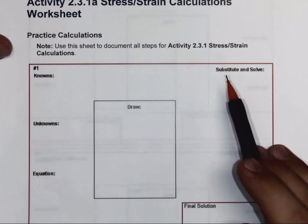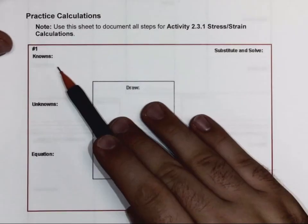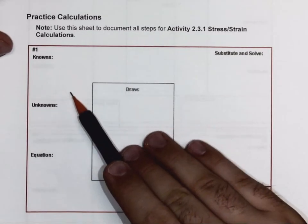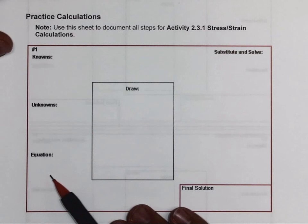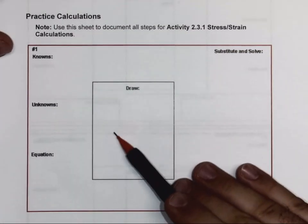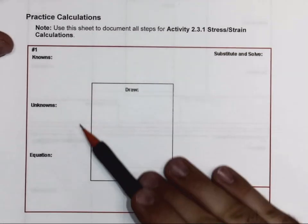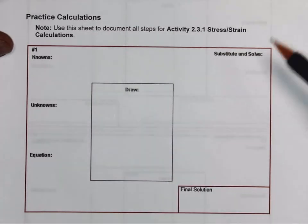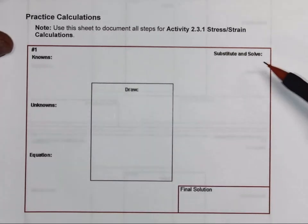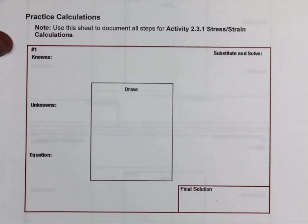So here's number one. We're going to be going through a five-step process: documenting knowns, unknowns, what equation we need. First thing we'll start with is a drawing — figuring out all the things we need — then solve the problem, substituting and solving, and then putting in our final answer in the corner box here.